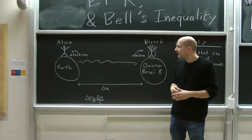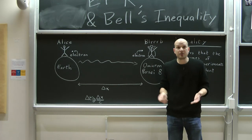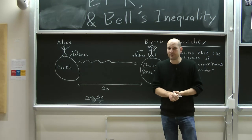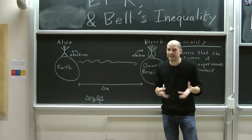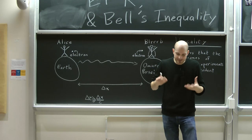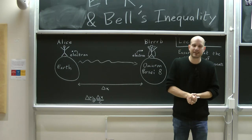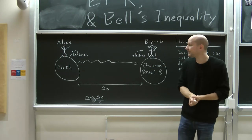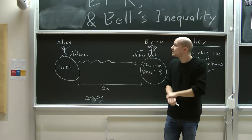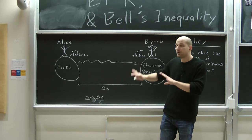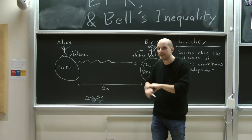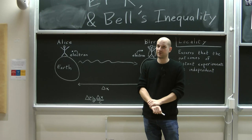So the principle of locality is not only a very reasonable assumption to make, but it seems like one that is actually important to define such basic things as the scientific method. Now as we're going to see today in this video, the world is actually not local — it violates this principle of locality.